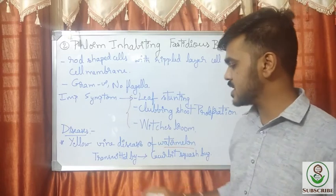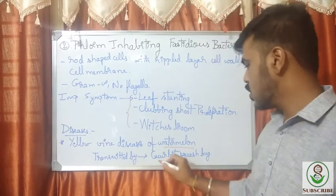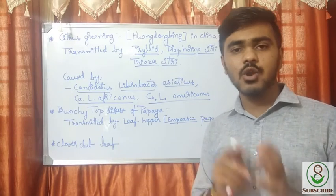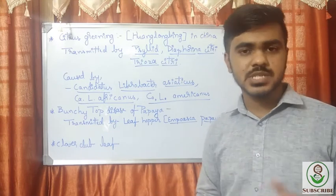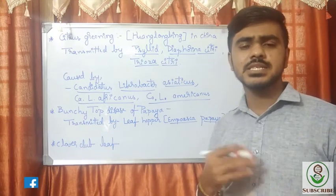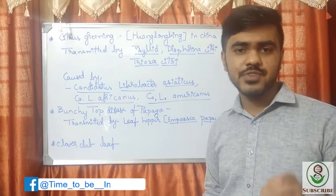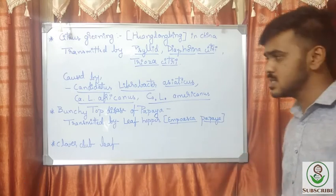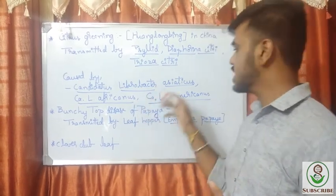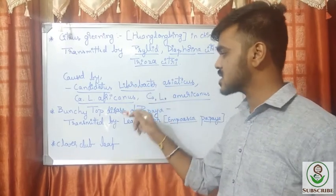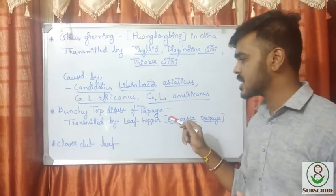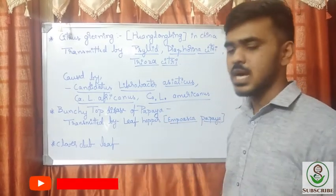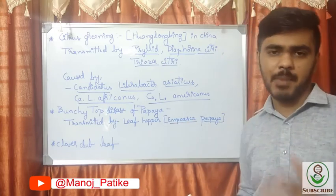Yellow vine disease of watermelon is caused by PIFB and transmitted by the cucurbit squash bug. Another important disease is citrus greening, called Huanglongbing (HLB) in China. It is phloem-inhabiting, so its vectors are also phloem feeders — transmitted by psyllids Diaphorina citri and Trioza erytreae. It is caused by Candidatus Liberibacter asiaticus, Candidatus Liberibacter africanus, or Candidatus Liberibacter americanus.